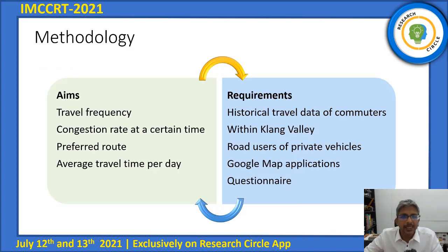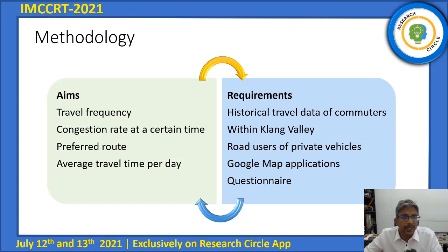The aim of this study is to present a travel behavior model that provides prediction and visualization of travel patterns of commuters and routes. The model will address questions such as: what is the travel frequency of the existing travel pattern and travel time estimation? What is the congestion rate at a certain time? And what is the preferred or suggested route and the average time per trip?